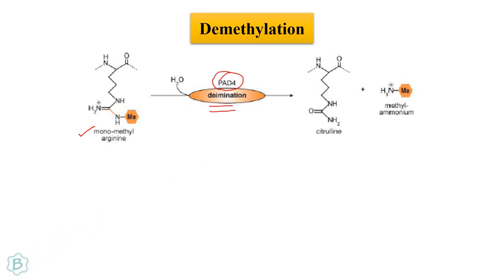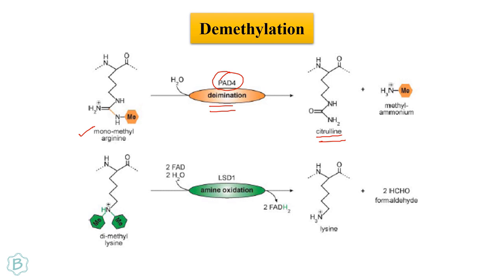For demethylation of monomethyl arginine, the reaction is through de-imination by the enzyme PAD4, which generates citrulline on the histones — not returning the arginine residue. In the case of lysine demethylation, the reaction is amine oxidation carried out by LSD1 enzyme, returning the lysine residue along with formaldehyde as a side product.